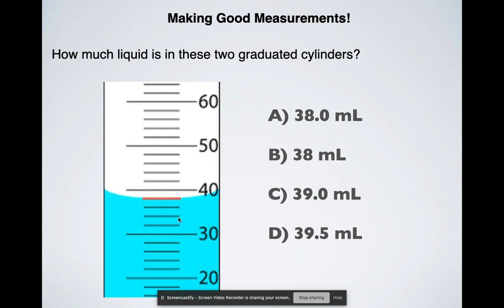So I have 30 and I have 40 and then I have these little lines here. What do these lines represent then? 32, 34, 36, 38, and then 40.